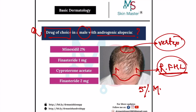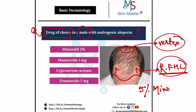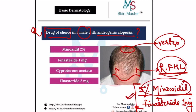In this condition, we generally treat with 5% minoxidil topically, and the preferred oral drug is finasteride at a dose of 1 mg. So the ideal treatment is topical minoxidil and oral finasteride.